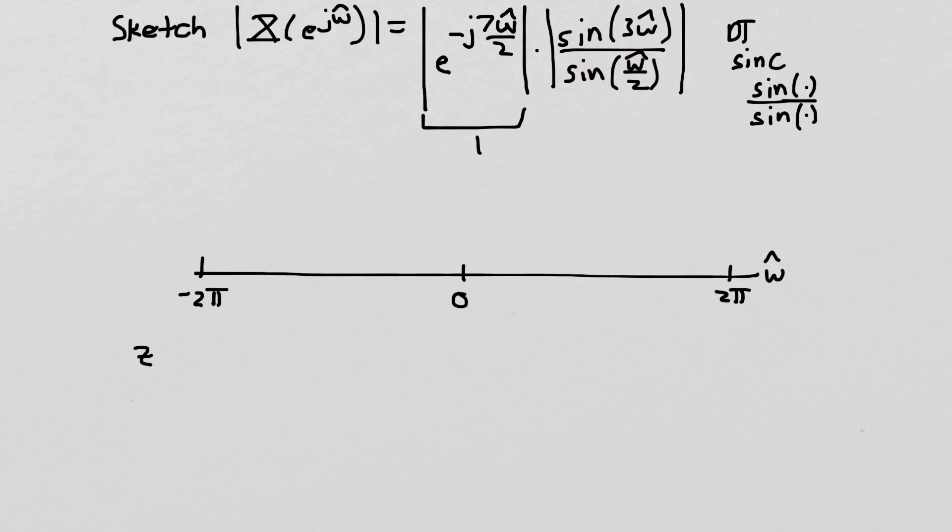It's always good to start off by looking at where the numerator and the denominator go to zero. So where are the zero crossings? If we look at where the zero crossings are, the zero crossings of sine of three omega hat, that sine goes to zero wherever the argument is a multiple of pi. So that's three omega hat equals pi L, where L is just some integer. So we say that these zero crossings are at pi over three times L. So multiples of pi over three, the numerator will go to zero.